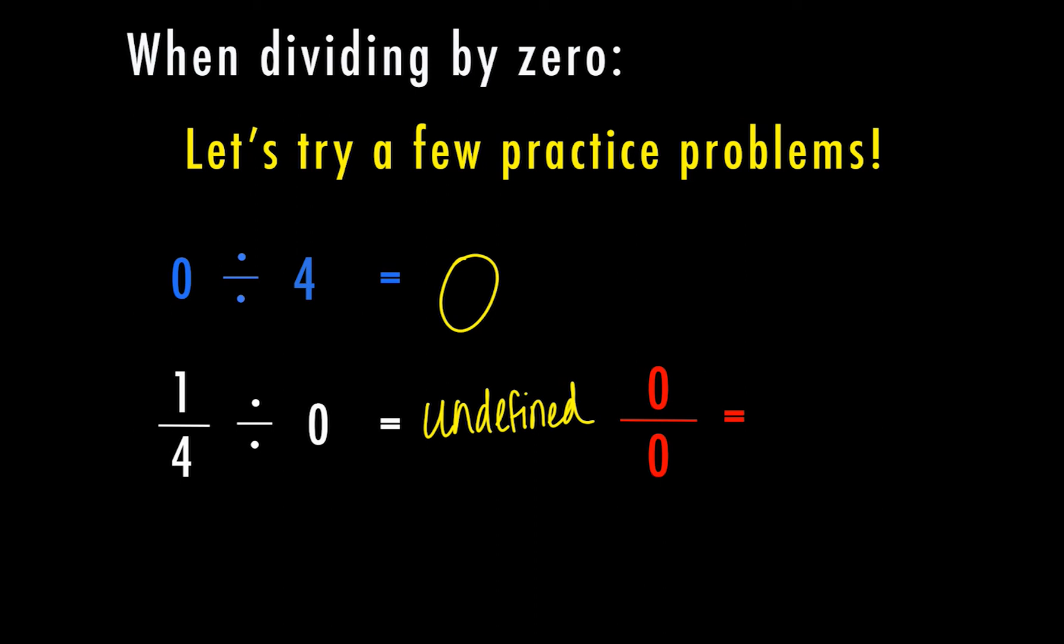That means that zero divided by zero means that I can't split zero into zero groups either. So it's still undefined. You could also say no answer.